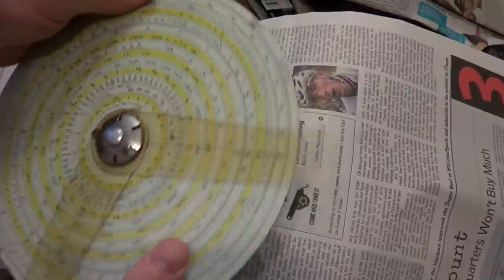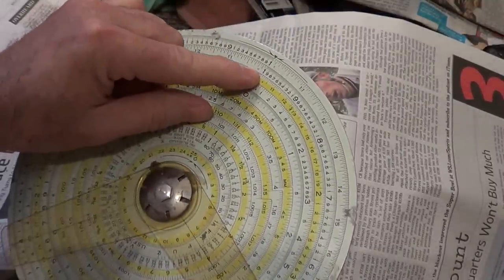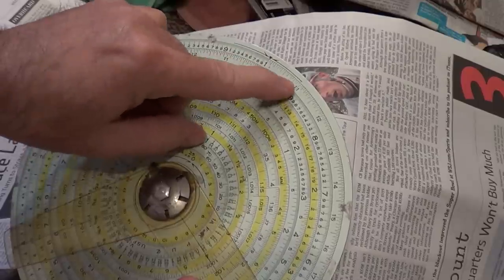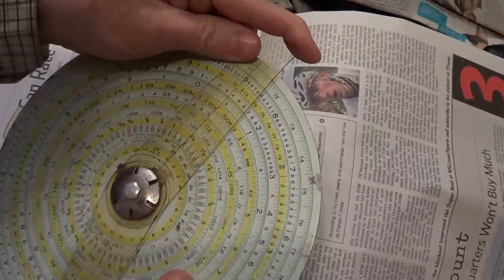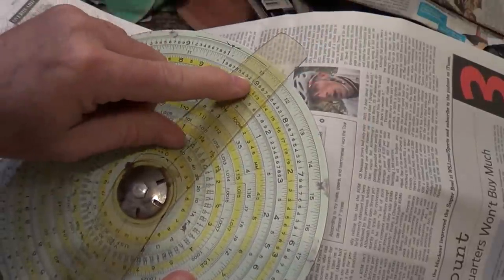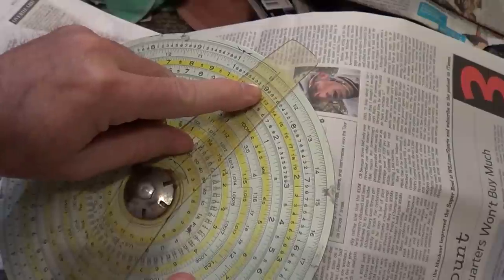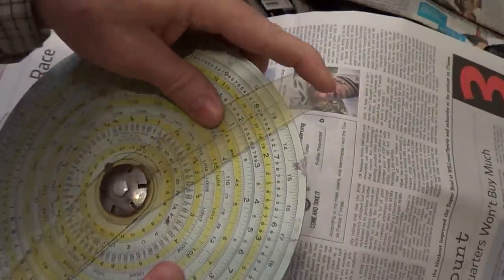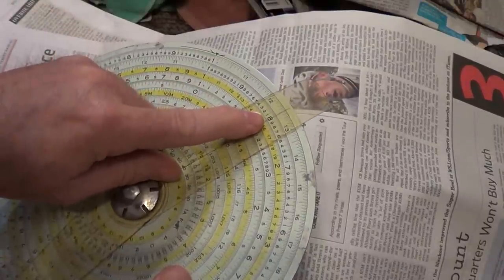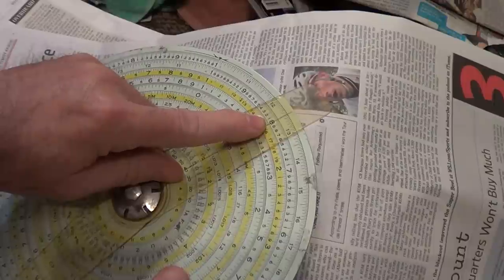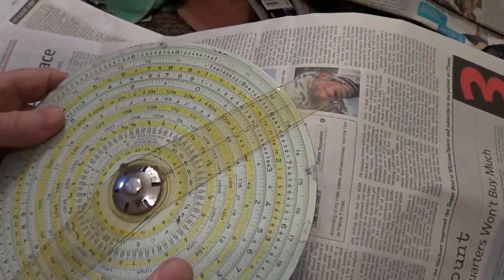That's the C scale. There's an inverted C which is here, which is just the invert. So if this is 1.1, this is the inversion, which is nine point something. If you take 1.25 on the C scale, this is 0.8 on the CI inverted scale. It's the same as a regular linear slide rule, except it's longer.